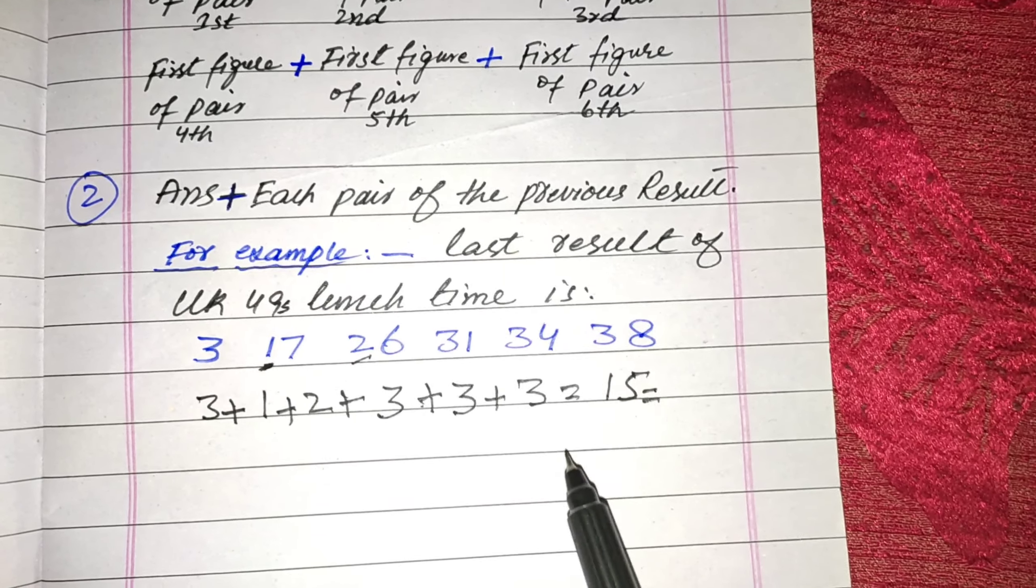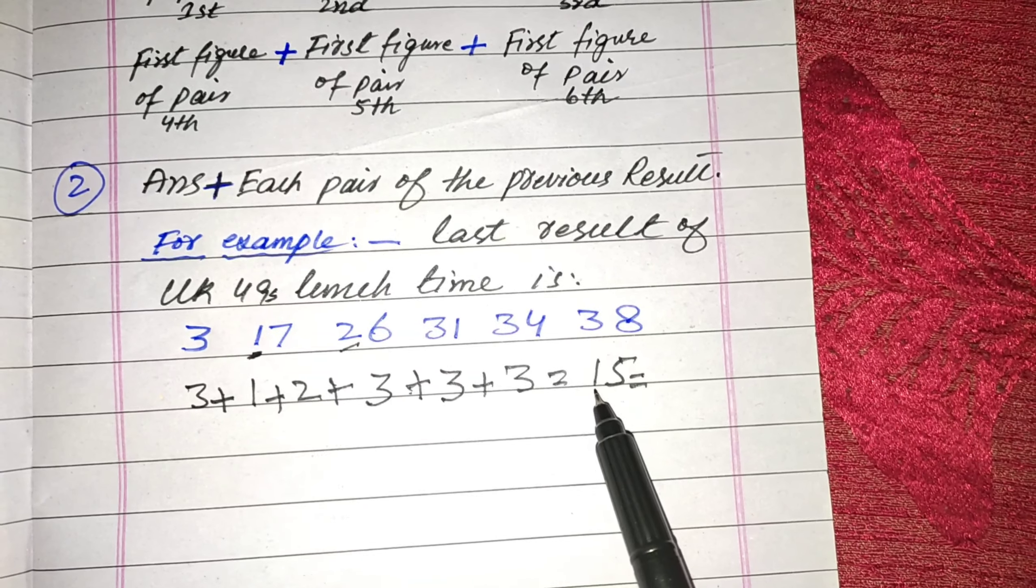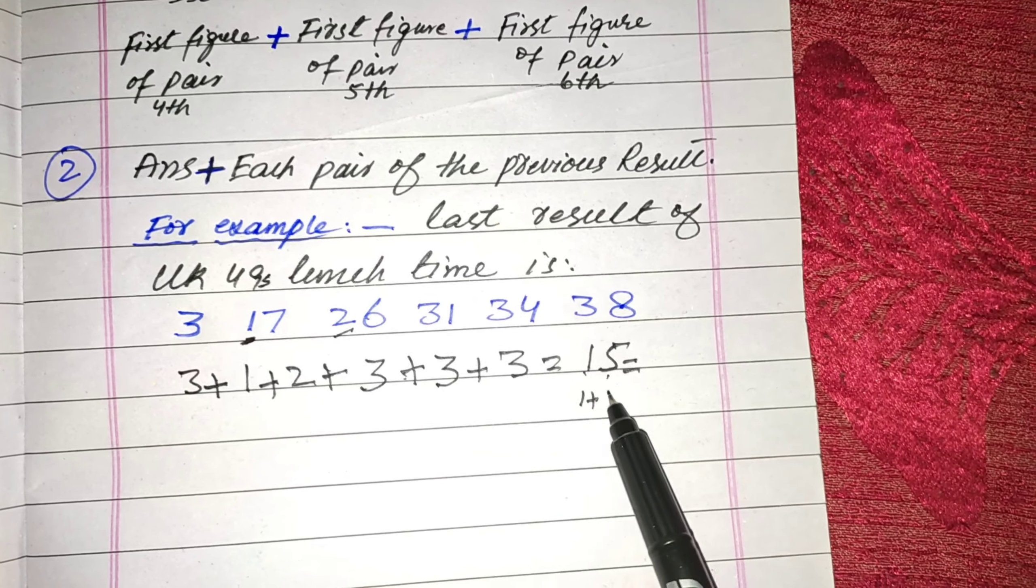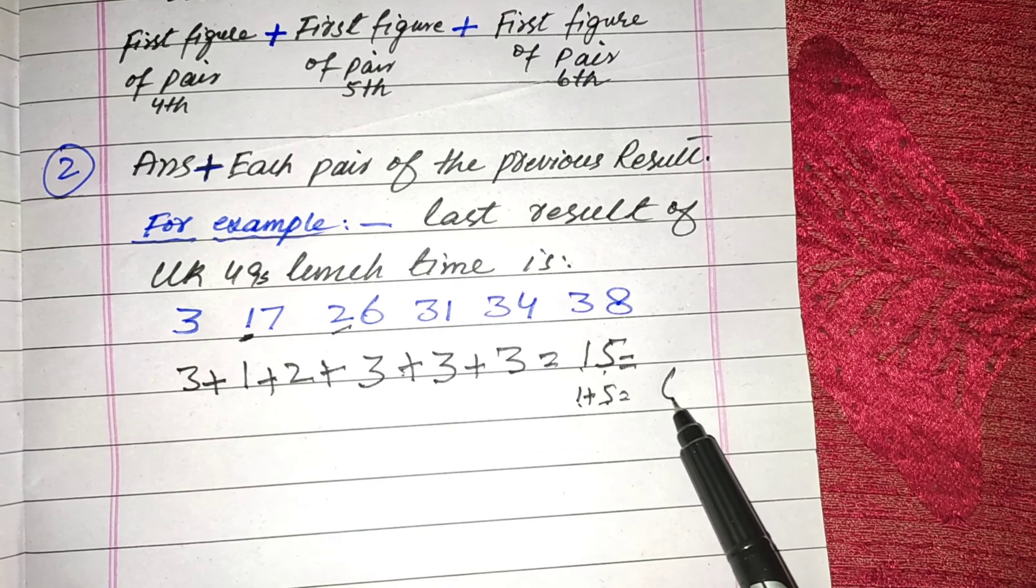Now make this a single pair. For the single pair, you add 1 plus 5. 1 plus 5 is equal to 6.